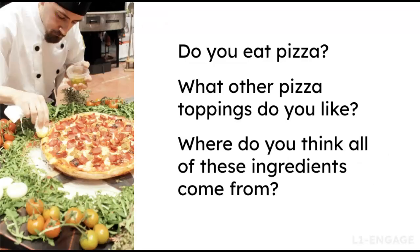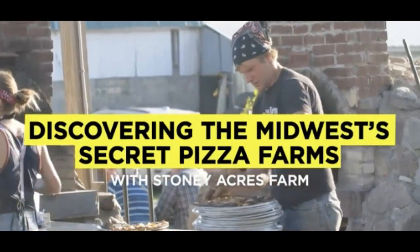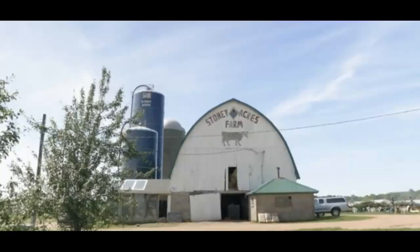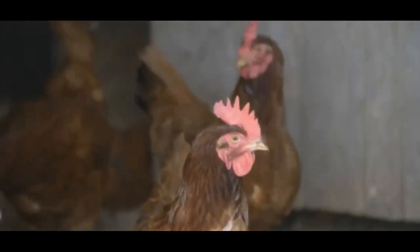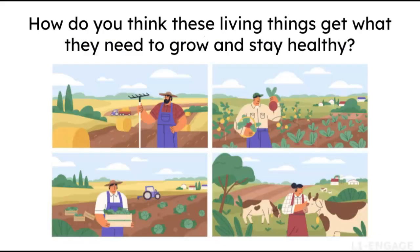You'll ask students questions about what toppings they like on pizza and where they think the ingredients come from. You'll show a video of a pizza farm and ask students what they observe. You'll also ask students what questions they have and have them write them down on post-it notes for the class driving question board. You'll then show images of farms and provide students with extra post-it notes to record any new questions they come up with during their discussions. The goal is to support students to ask multiple questions related to the phenomenon that we can use science to explore.